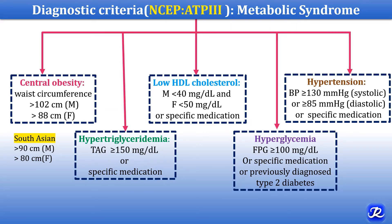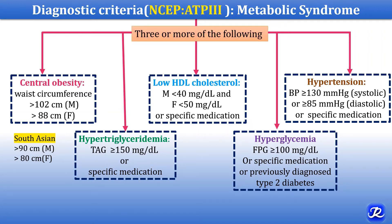The fifth criterion is presence of hypertension — if systolic blood pressure is more than or equal to 130 mmHg, or diastolic blood pressure is more than or equal to 85 mmHg, or if the person is on specific medication for hypertension. So these five important criteria for diagnosis of metabolic syndrome are: central obesity, hypertriglyceridemia, low HDL cholesterol, hyperglycemia, and hypertension. To diagnose a person with metabolic syndrome, at least three or more of these criteria must be present.